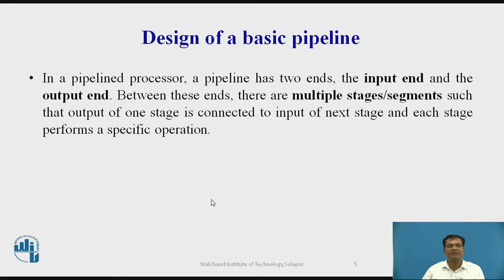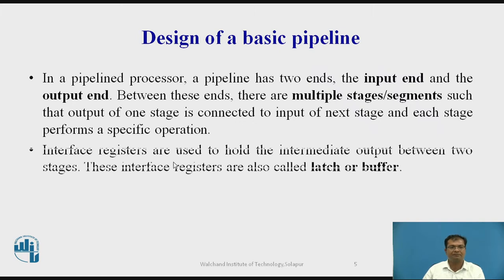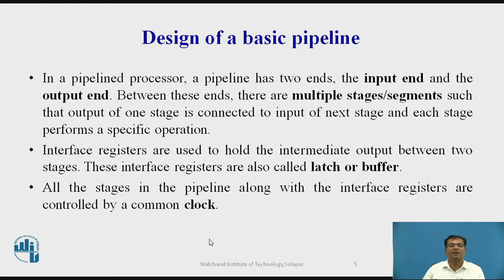In a pipeline processor, there are two ends — one is the input end and the second is the output end. In between these two ends, there are multiple stages or segments such that the output of one stage is connected to the input of the next stage, and each stage performs a specific operation. Interface registers are used to hold the intermediate results and are also called latch or buffer. All stages in the pipeline along with the interface register are controlled by a clock circuit.